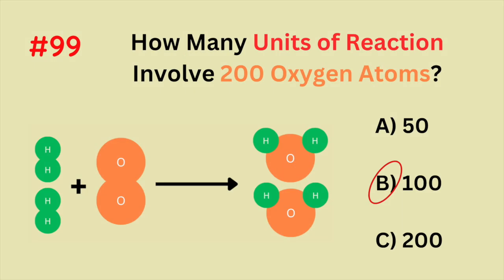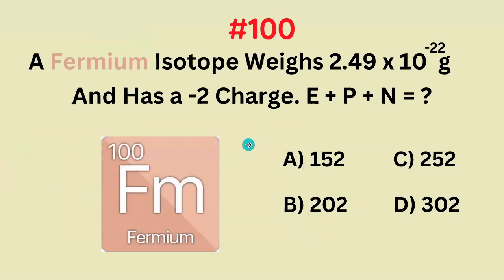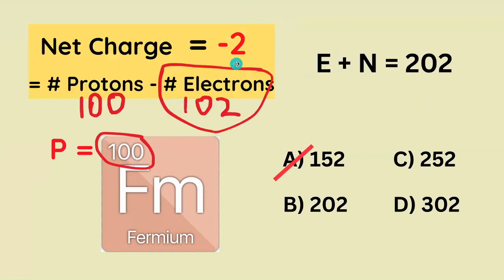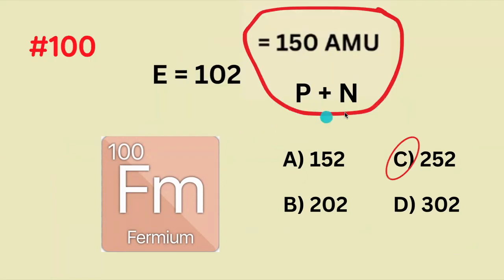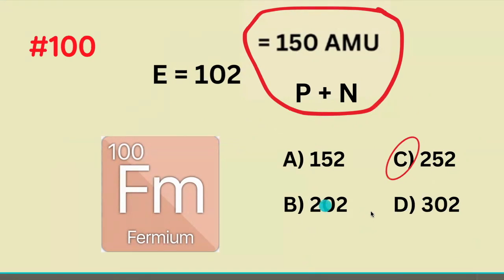A fermium isotope weighs 2.49 times 10 to the negative 22 grams and has a negative 2 charge. What's the sum of all the subatomic particles? The number of protons is 100 — the atomic number. With a negative 2 charge, it has two more electrons than protons, so E plus P is 202. Converting the mass to AMU gives a mass number of 150, so P plus N equals 150. Therefore E plus N plus P equals 252.